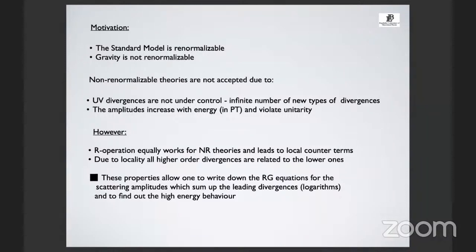Whether a theory is renormalizable or not, it doesn't matter. We can subtract all divergences, introduce counterterms, and eventually all these divergences are local. The counterterms are local—in local field theory, all ultraviolet divergences are local. That means they are either constants times fields, or they have dependence on momenta that is only polynomial in each order of perturbation theory. There are no non-local singularities. These properties allow one to write down what we usually call the renormalization group equations.